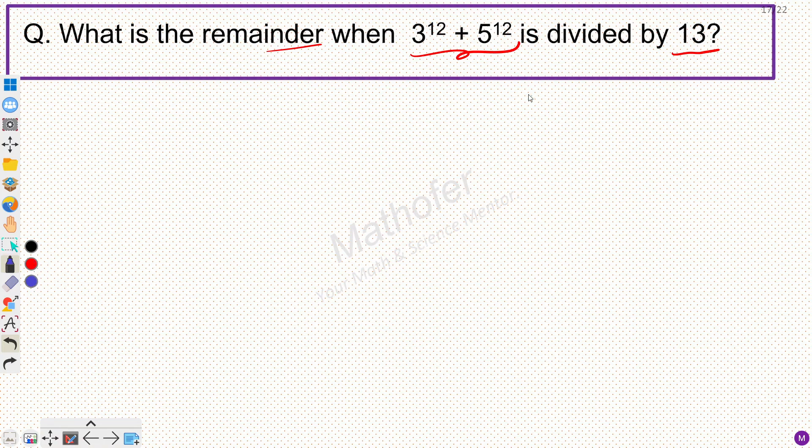Now the very first thing that you should notice here is that 13, my divisor, is a prime number, and the powers that are being used here, 12, are one less than my divisor. So let's say this is p, so my powers are p minus 1.